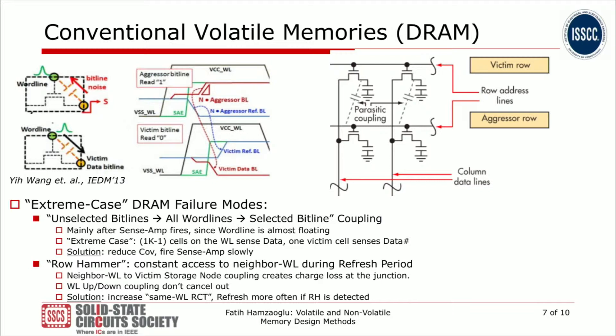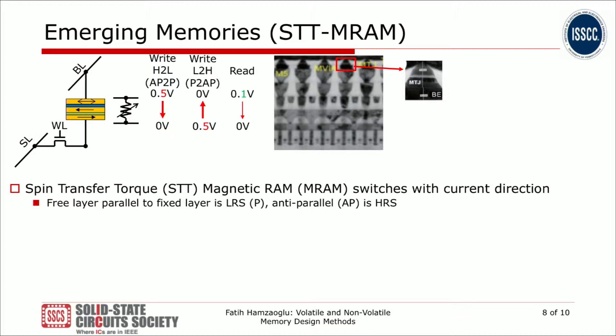Another extreme access failure mode in DRAM is row hammer. When you access a wordline, that access can disturb the bit at the neighboring bit cell. During a refresh interval of say one millisecond, you could be accessing the aggressive wordline tens of thousands of times, disturbing the neighbor bit. Solutions include limiting the random cycle time to the same wordline or refreshing the disturbed bits more often when a row hammer is detected.